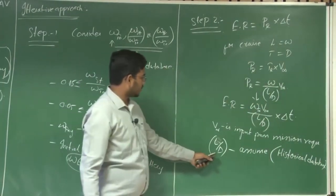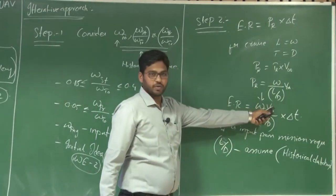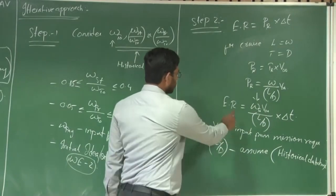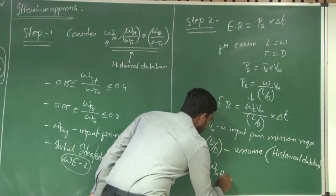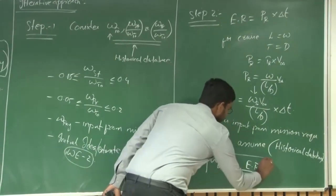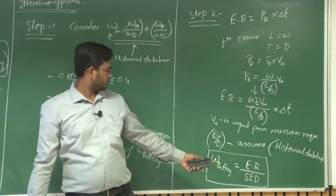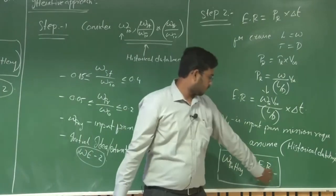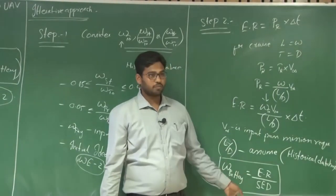The only assumption you have to make is what is the corresponding L/D. Once you know L/D, you have W_T0, V infinity, and the time of flight, so you can figure out what is the corresponding energy required. Once you have the energy required, you can estimate the battery weight: battery weight equals energy required divided by specific energy density. Do a market survey to find out what types of batteries are available and their corresponding specific energy densities, then select one to figure out the corresponding battery weight for this particular mission.